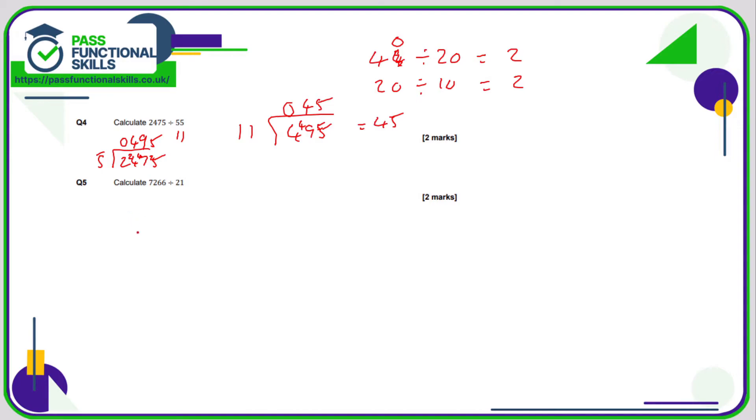Question number five, this one is also fairly nasty. We're dividing by 21. Now I know that 21 can be divided by seven. 21 divided by seven is three. I don't know if this number can be divided by seven, but let's find out. Sevens into seven goes one. Two divided by seven, zero, carry the two. 26 divided by seven is three. Three sevens are 21, remainder of five. And yes, 56 can be divided by seven. So that's an eight.